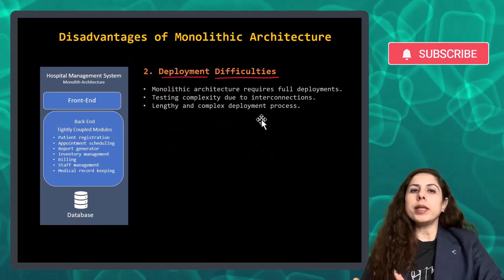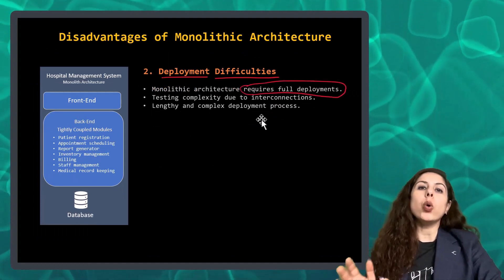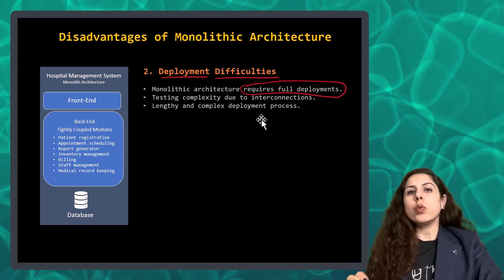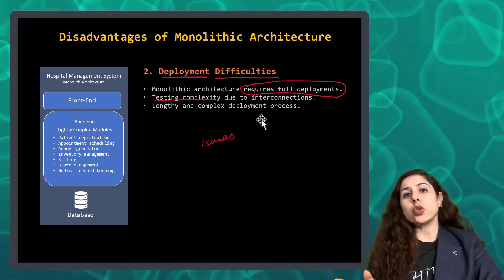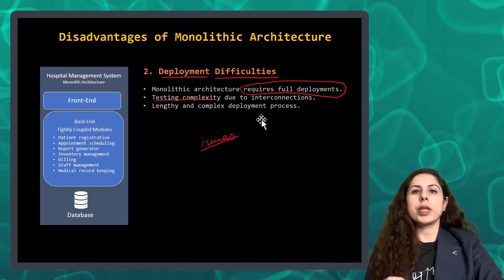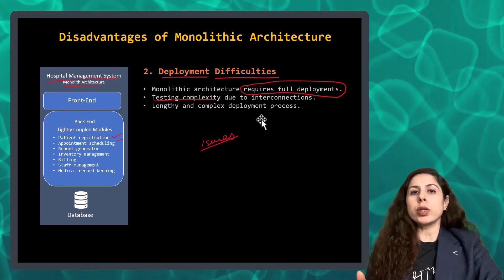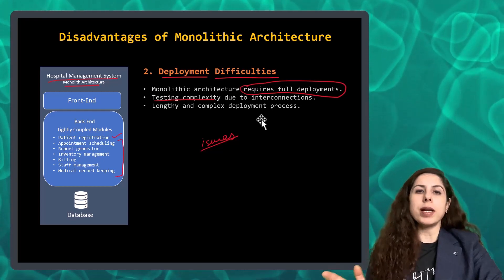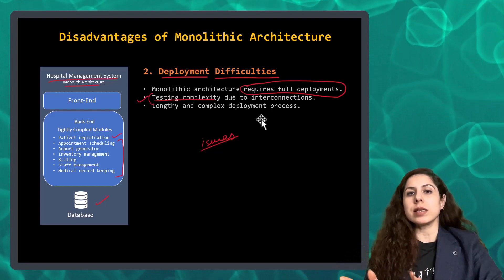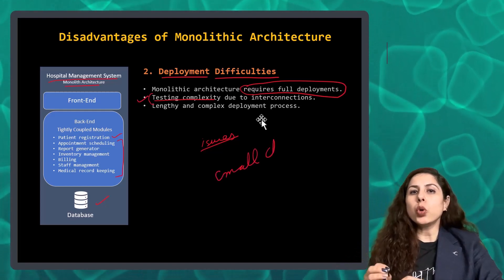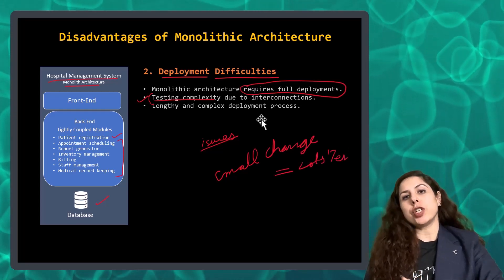Second, deployment difficulties. In monolithic architecture, deploying the application means deploying the whole thing, even for small updates, which is inefficient. Testing becomes difficult as changes can cause unexpected issues throughout interconnected components. For example, in the hospital management system, adding multiple phone numbers to a single patient affects many parts of the system, including the database, requiring extensive testing of the entire system for a seemingly small change.